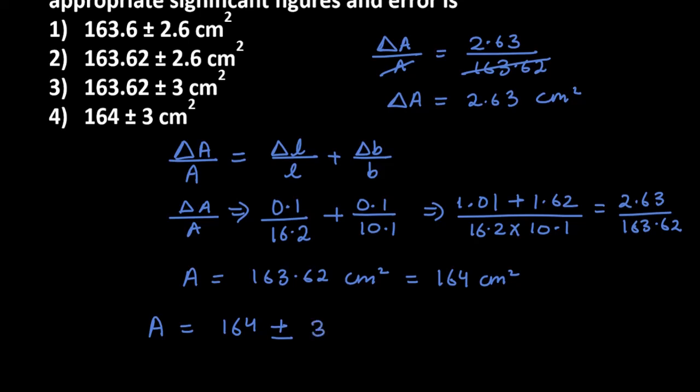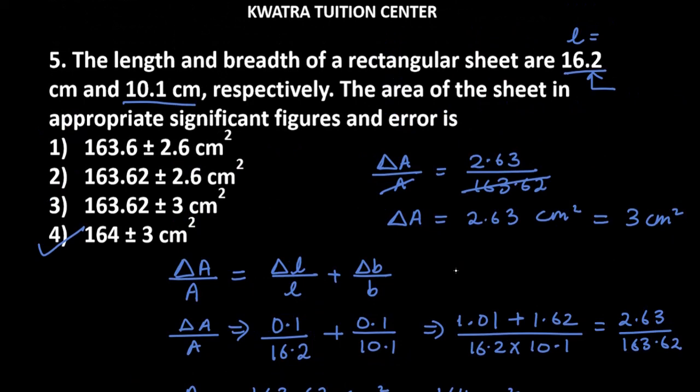It's 164 and you write the error plus minus whatever your value is. Del A with significant figures can be written as 3 cm squared, so it's 164 plus minus 3 cm squared. This is the area of question number 5 and the right option is the fourth part. First of all, you have to do significant figures and error, that's important.